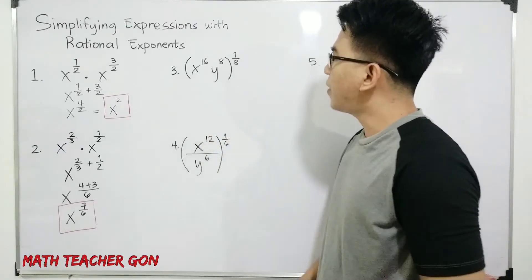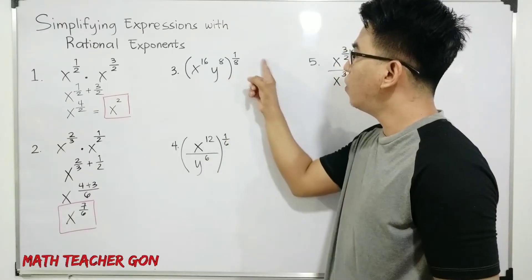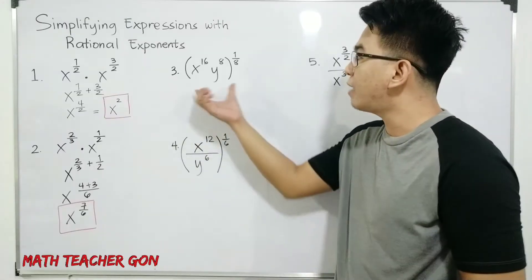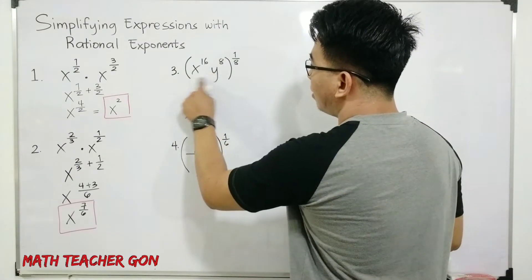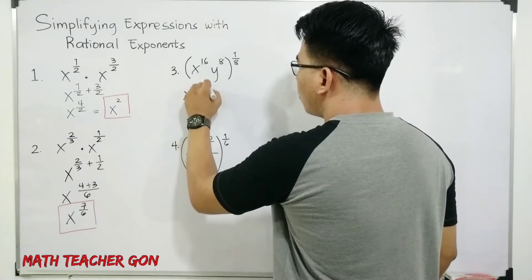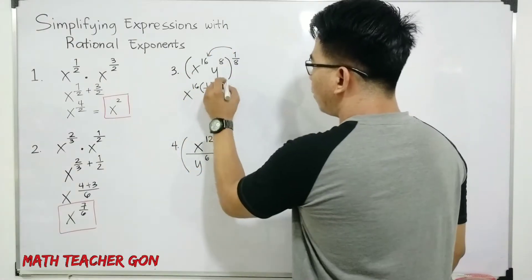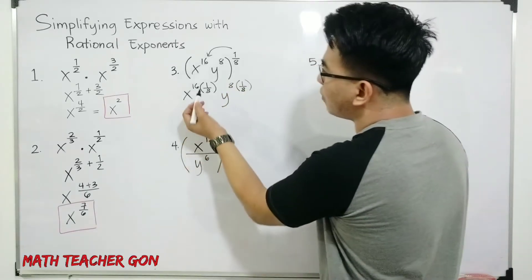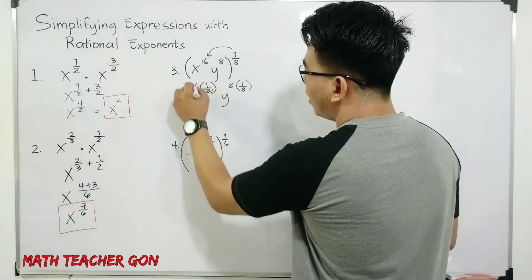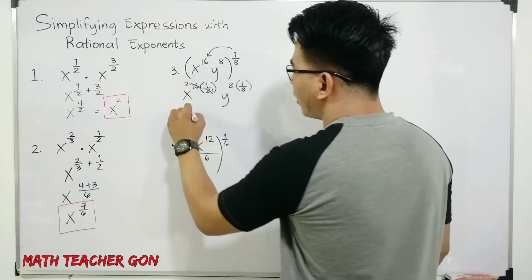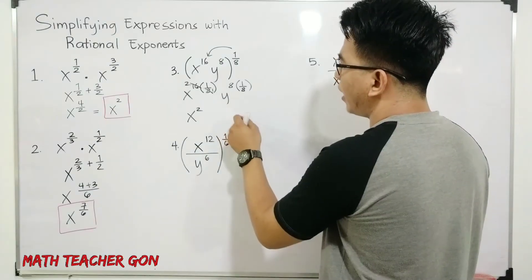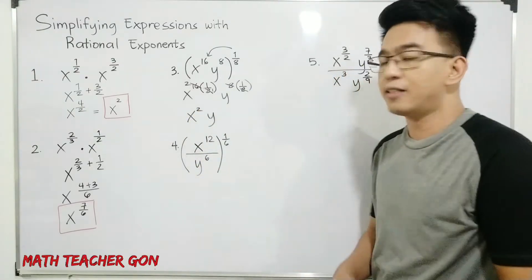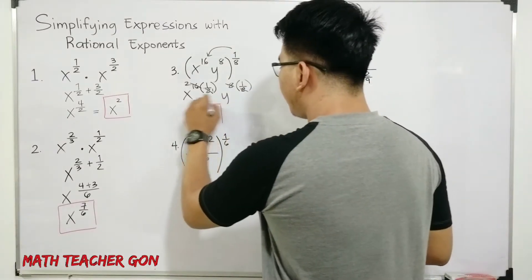For item number 3, we have x raised to 16, y raised to 8, all raised to 1 over 8. What you need to do is multiply the exponent outside the parenthesis one by one by the exponents inside. For x: x raised to 16 times 1 over 8. We can simplify — cancel out 8, giving 2 — so x squared. For y: y raised to 8 times 1 over 8. Cancel out 8 and 8, giving exponent 1, so simply y. The final answer for item number 3 is x squared y.